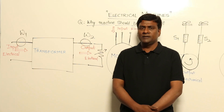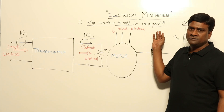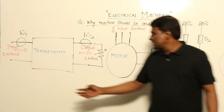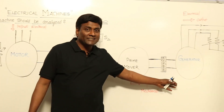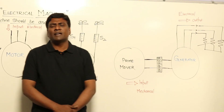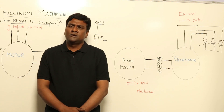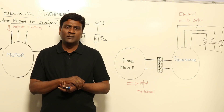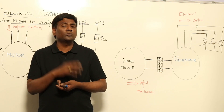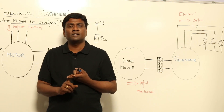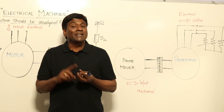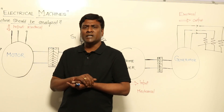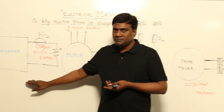Let us start with why we have to analyze machines. We have three types of machines: transformer, motor, and generator. In any machine, the terminal performance characteristics should be known. Terminal performance characteristics include voltage regulation of a generator, speed regulation of a motor, external characteristics like torque-speed characteristics, and efficiency.